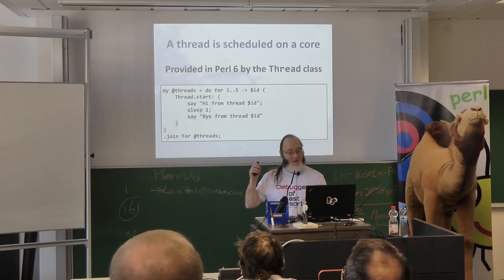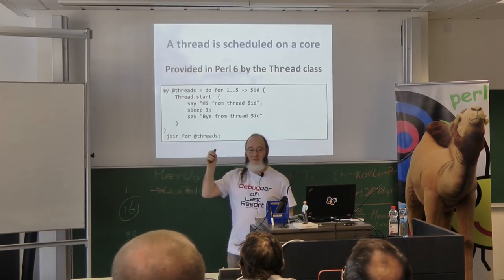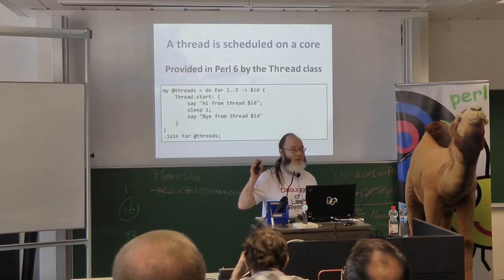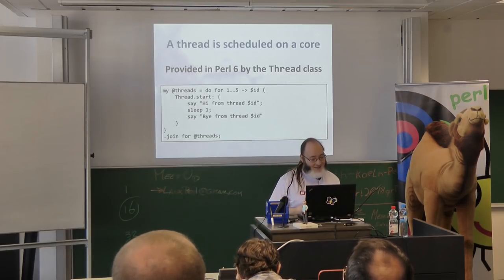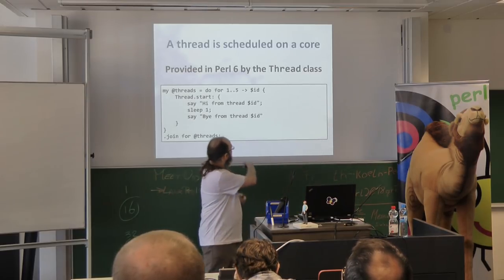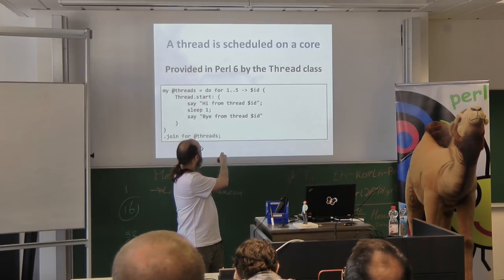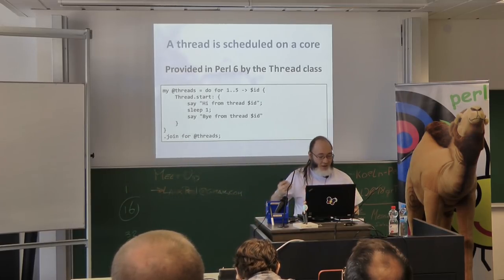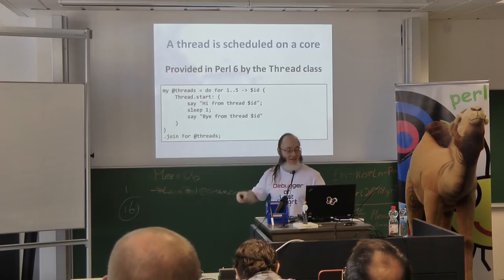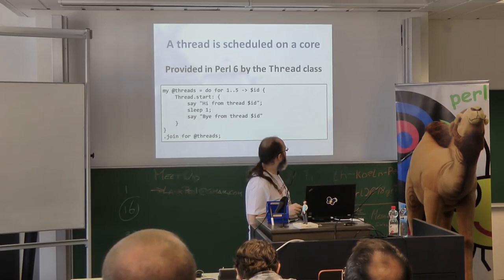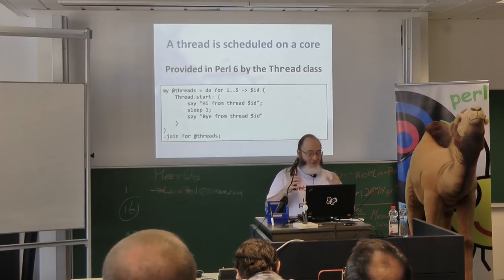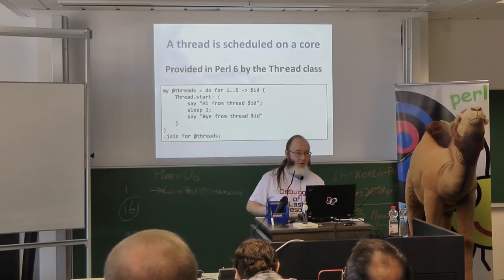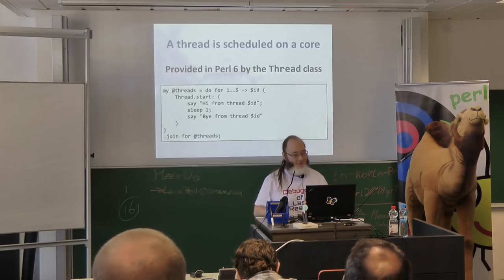How can we get code to run on a core? The most primitive way — the way that maps into how the operating system thinks about things — is to start a thread. In Perl 6 we can do that pretty straightforwardly. Here we just do a loop from one to five, say 'hi from Fred ID', sleep one, say 'bye from Fred ID', and then join all of the Freds — that means wait until the Freds are completed. That will spit out hi and bye from all of them at roughly the same time. The exact ordering will vary; just because you set them off in one order doesn't mean they'll finish in the same order.